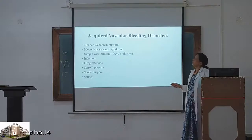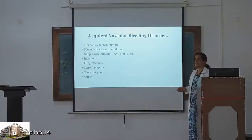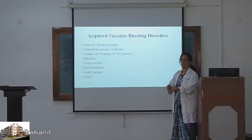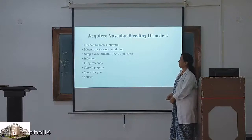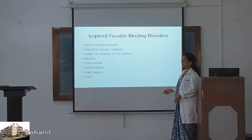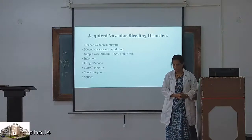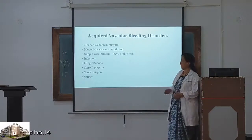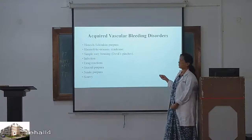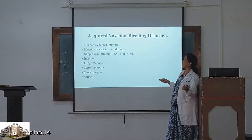Acquired vascular bleeding disorders: drugs can cause hemorrhagic presentations immediately, as with steroids. Scurvy is caused by vitamin C deficiency — vascular integrity is lost, causing fragility. Others include Henoch-Schönlein purpura and hemolytic uremic syndrome.